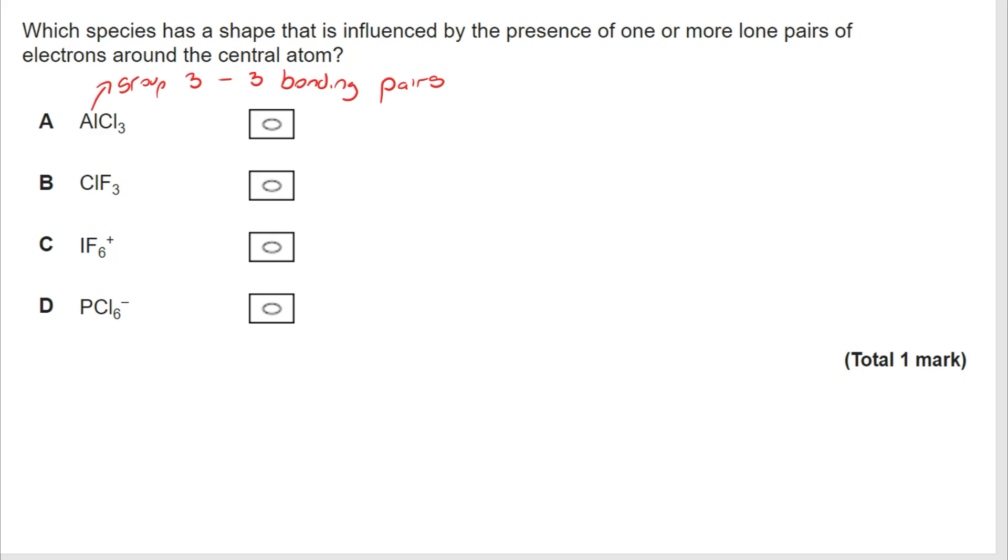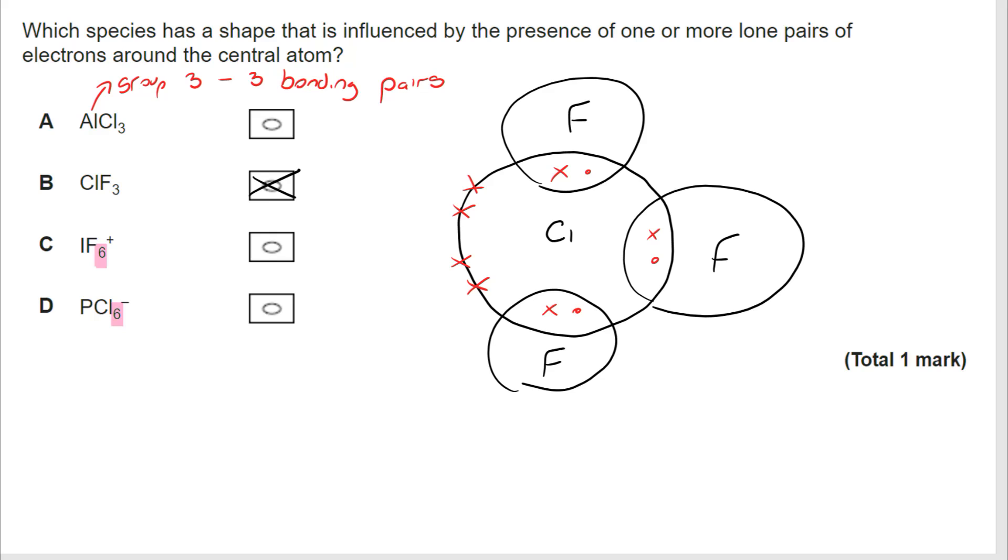Similarly, I can actually look at IF6+ and PCl6-. And because there are six bonds around that central atom, it's very, very unlikely you're certainly not going to see an example where there would be a lone pair as well. Six pairs of electrons is really the maximum that you will see. But if I draw out my ClF3, you can see that I've actually got two lone pairs on there. So the correct answer is B.